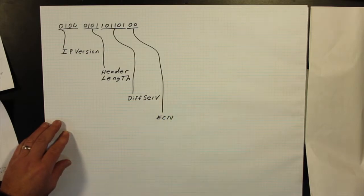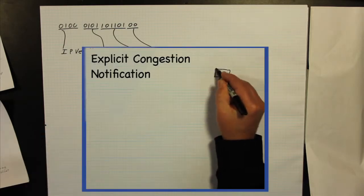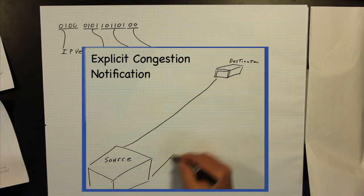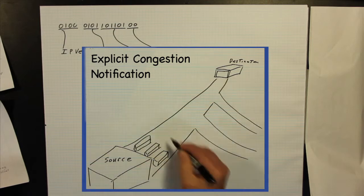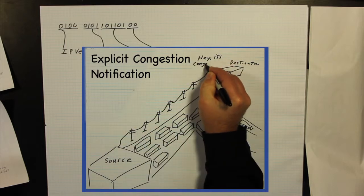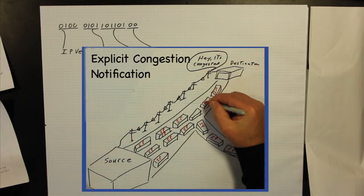ECN, or Explicit Congestion Notification, is a method used by some networks to inform the transmitting devices about the existence of congestion on the network. These two bits act as flags to indicate the presence of congestion.